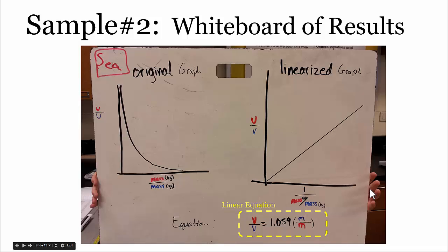Looking at another group's data, they found something very similar. When they graphed the ratio of the masses versus the ratio of the velocities, they also found an inverse type relationship. As the mass ratio increased, the velocity ratio decreased.